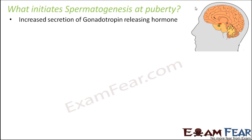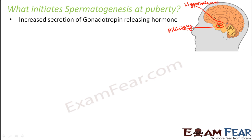We know that in the brain there are two glands. One is the hypothalamus, which acts as a link between the nervous system and the endocrine system. The other is the master gland, or pituitary gland, located just below the hypothalamus. The pituitary gland controls secretion of hormones from all other glands, and the hypothalamus in turn controls the pituitary.